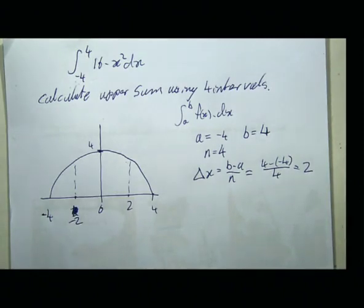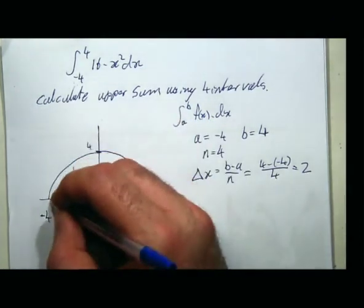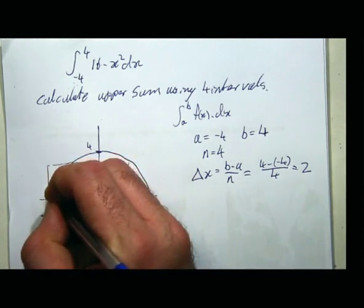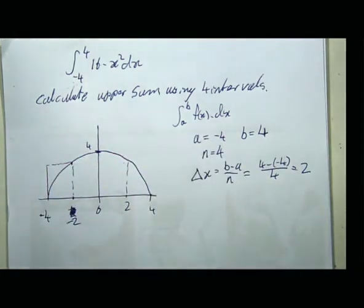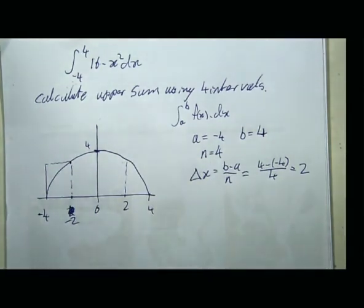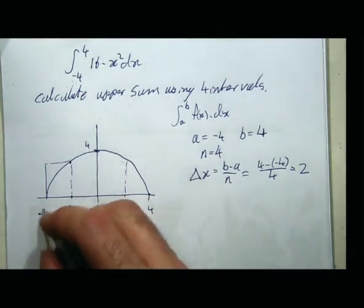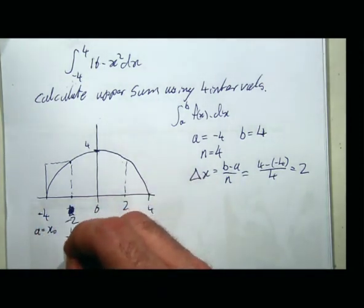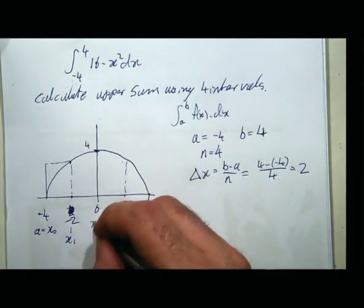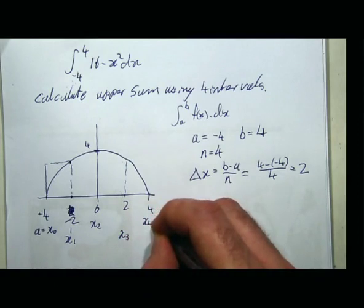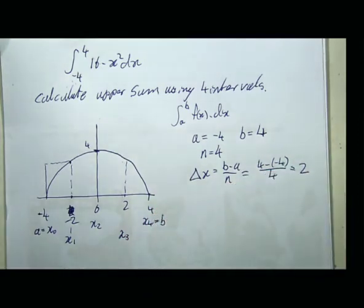With this first interval, the maximum value is up at the right. To work out that area I need to work out the function height at that point and multiply by 2. This is my point a, which I call x₀. Then x₁, x₂, x₃, and x₄, where x₄ equals b.